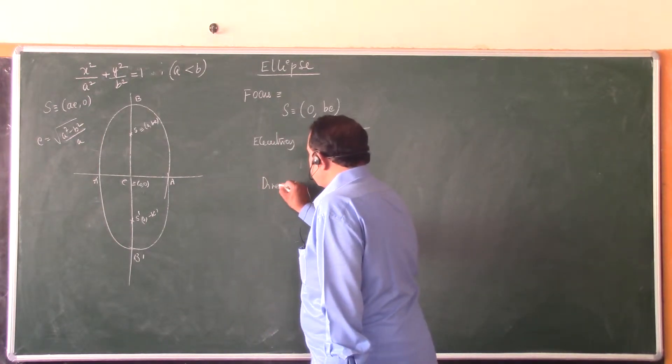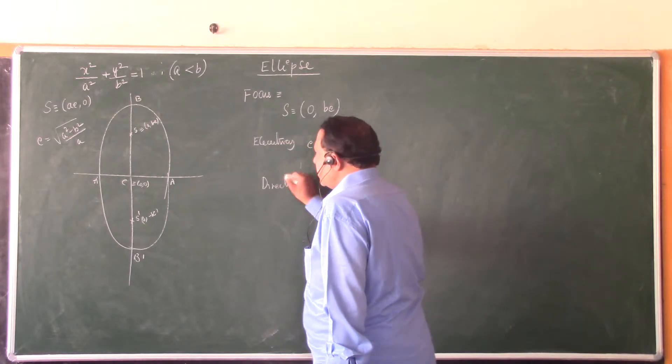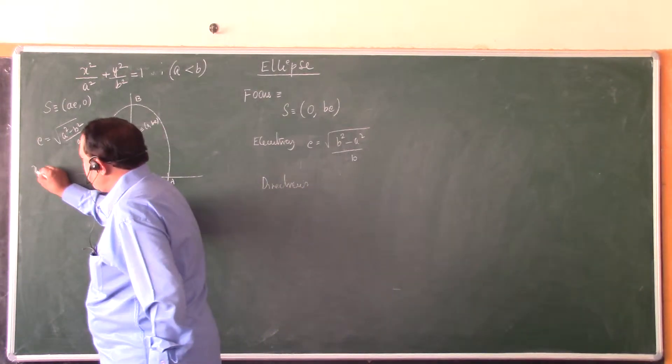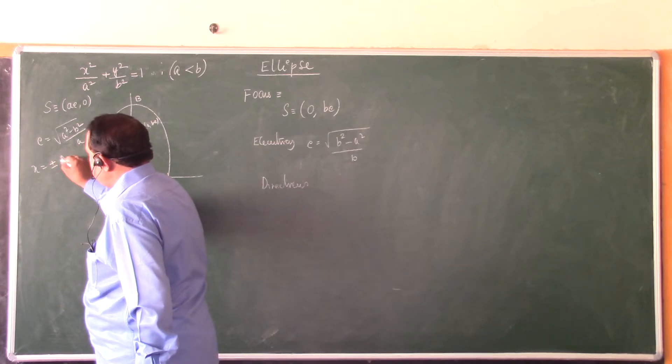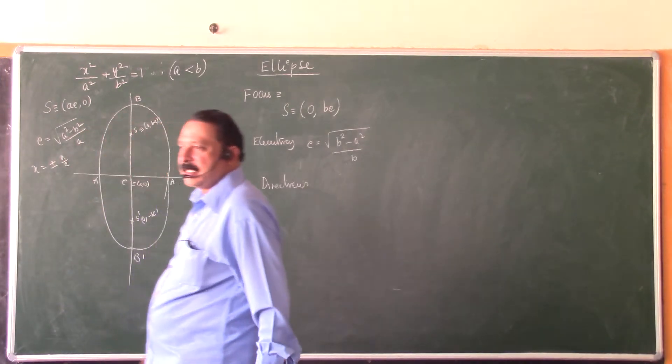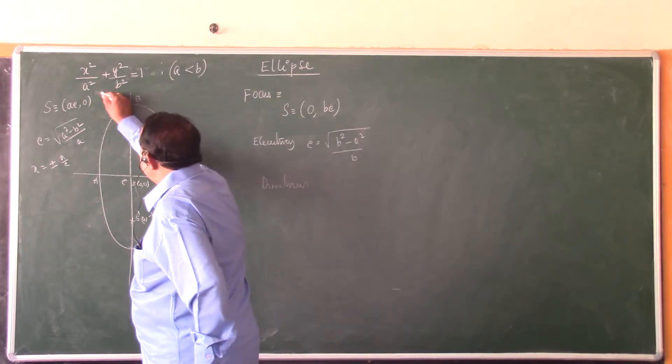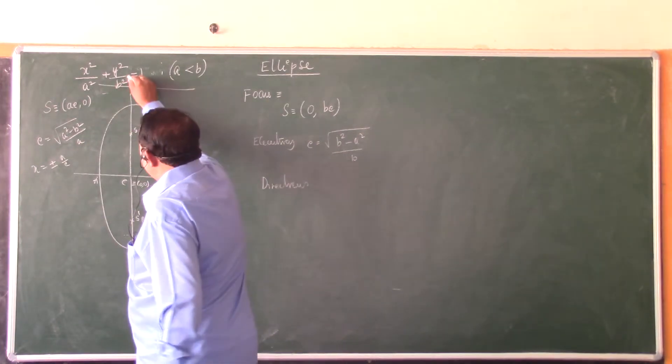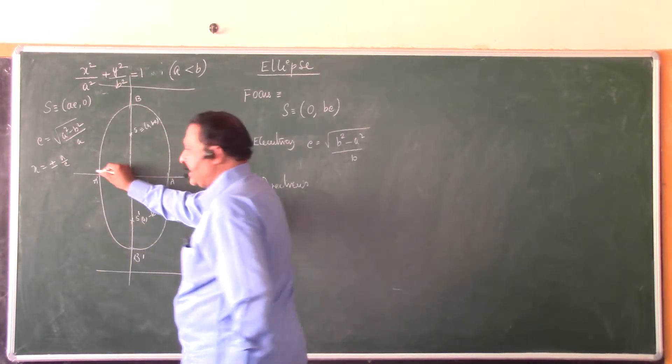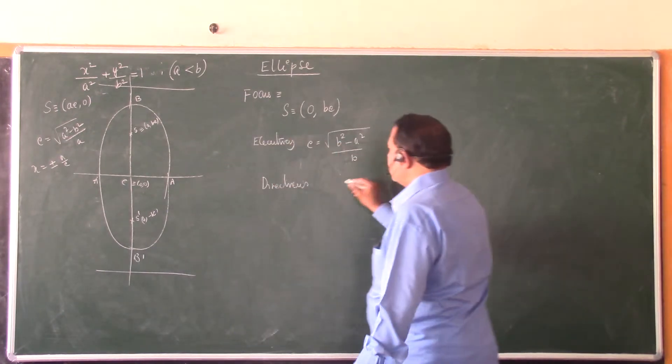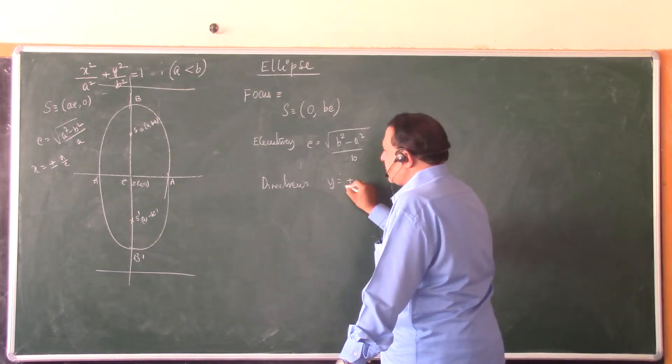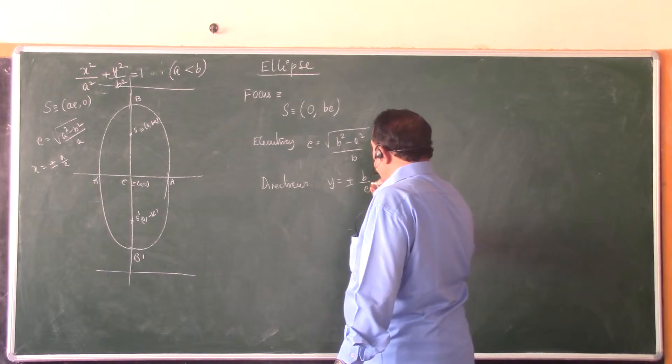What are the directrices for the ellipse in the standard form? We have x equals plus or minus a by e. So now, where do you find directrices? The directrices are now parallel to x-axis. So, y equals plus or minus b by e.